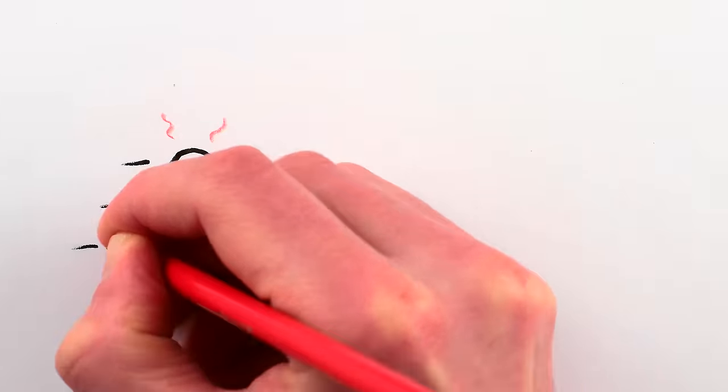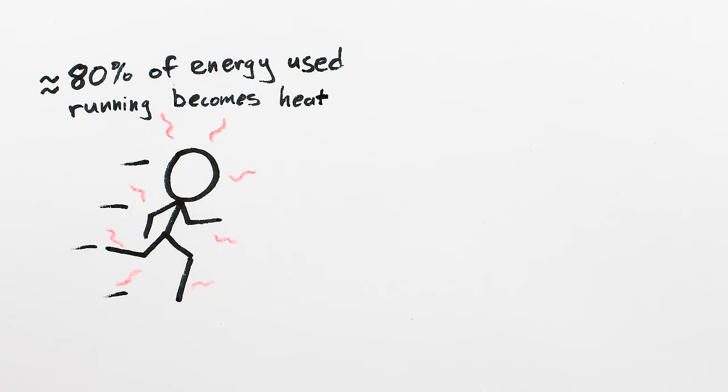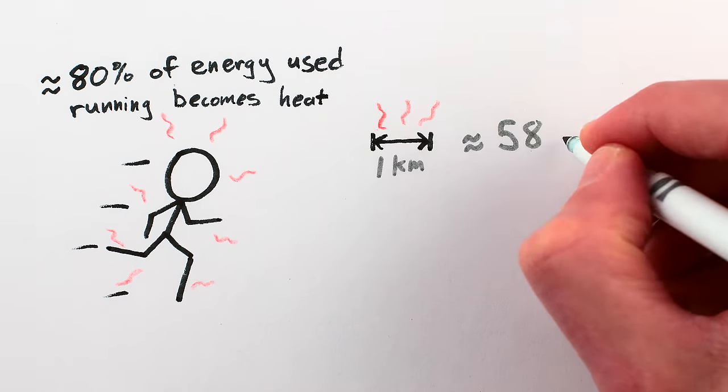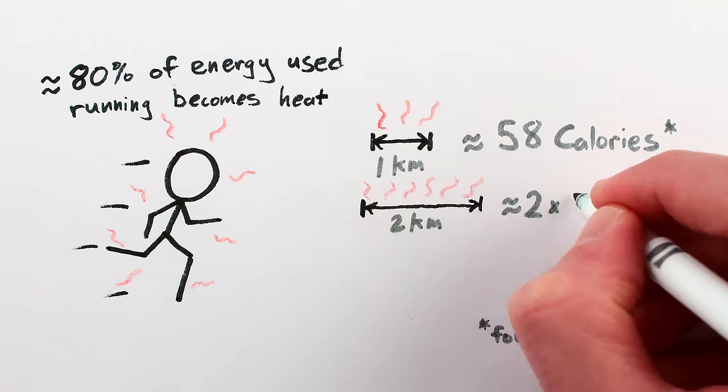Now, when humans run, we also generate a fair amount of heat inside our bodies. In fact, we produce a roughly constant amount of heat per kilometer traveled, so the faster you go, the more heat you generate any given minute.